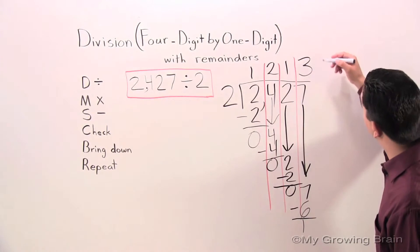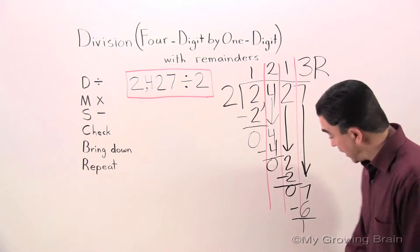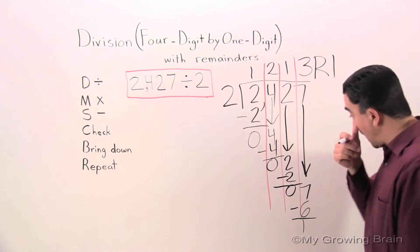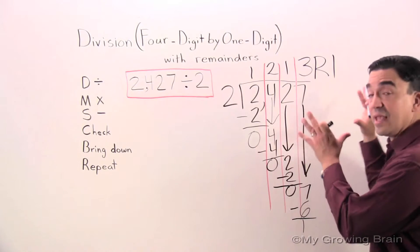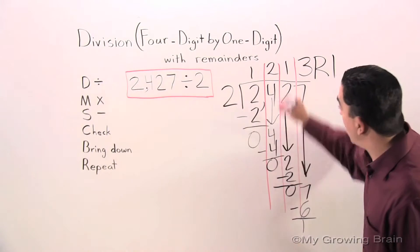First, though, we have to do this. Put remainder up there, because we do have a remainder of 1. So this problem is done. The quotient is 1,213 remainder 1.